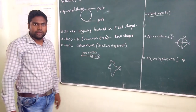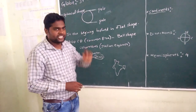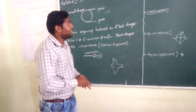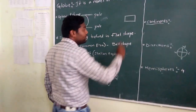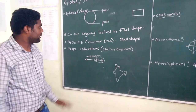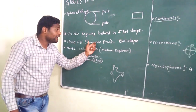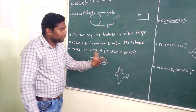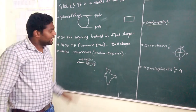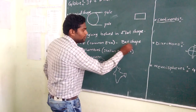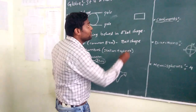Mostly in the beginning — I mean before 2000 years — everyone believed that earth is in the shape of a flat shape. But in the year 1400 CE — what is the meaning of CE? Common era — everyone believed that earth is not in the shape of flat.